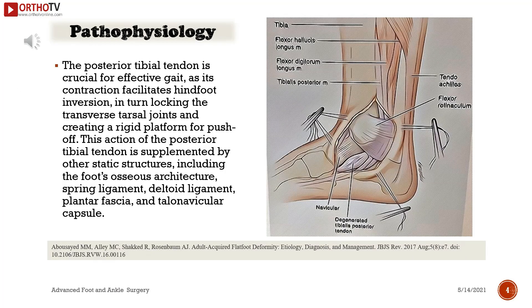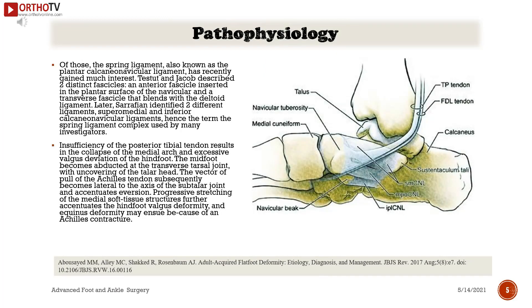The posterior part inserts on the sustentaculum tali of the calcaneus. The posterior tibial tendon is crucial for effective gait, as its contraction facilitates hindfoot inversion, in turn locking the transverse tarsal joints and creating a rigid platform for push-off. This action is supplemented by static structures including the foot's osseous architecture, spring ligament, deltoid ligament, plantar fascia, and talonavicular capsule. The spring ligament (plantar calcaneonavicular ligament) has recently gained much interest; Tsutt and Jacob described two distinct fascicles.